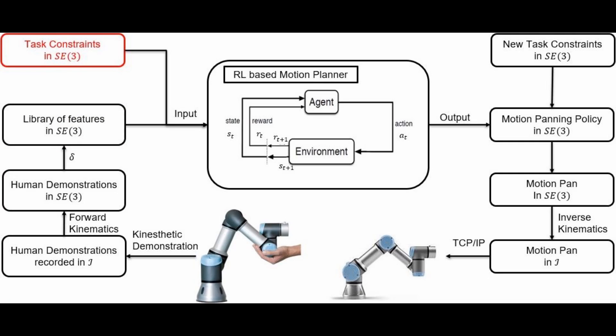After the library is set up, in order to obtain a general motion planning policy for the assembly and loading scenario, we specify 20 new tasks that cover all features of human demonstration operations to train the RL-based motion planner. After training, a motion planning policy is obtained.